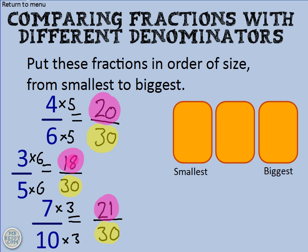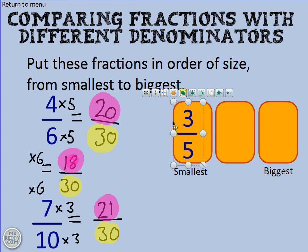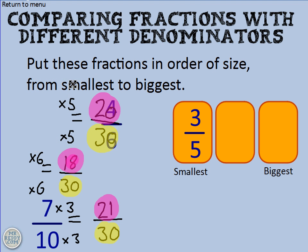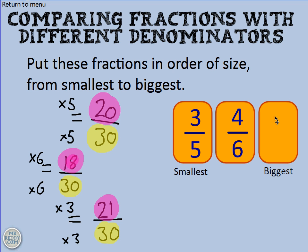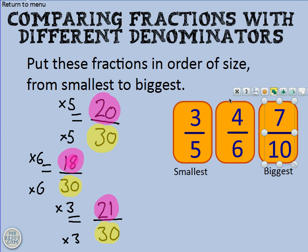So which one's the smallest? It's this one, because it's equivalent to 18 thirtieths — three fifths is the smallest. And which one's the next smallest? Four sixths, which is 20 thirtieths. And the biggest is seven tenths, which is 21 thirtieths.